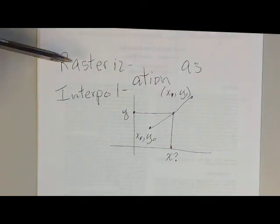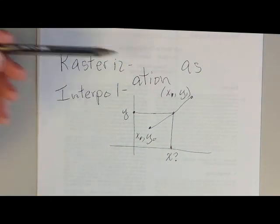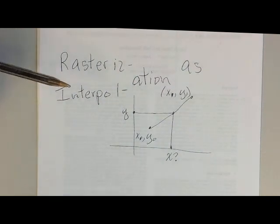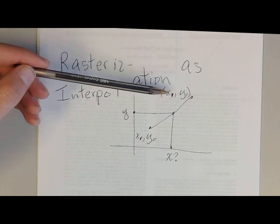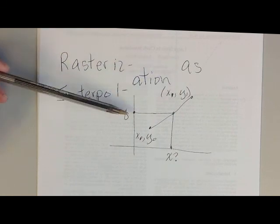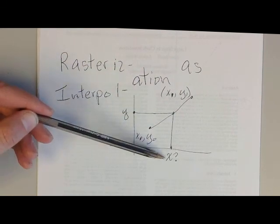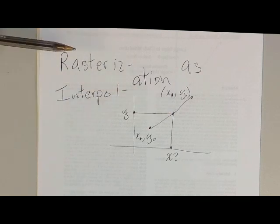Today we're going to talk about rasterization as a form of interpolation. If we have a line that starts at x0, y0 and goes to x1, y1, and we know the value of y, then what is the value of x for a point on the line?